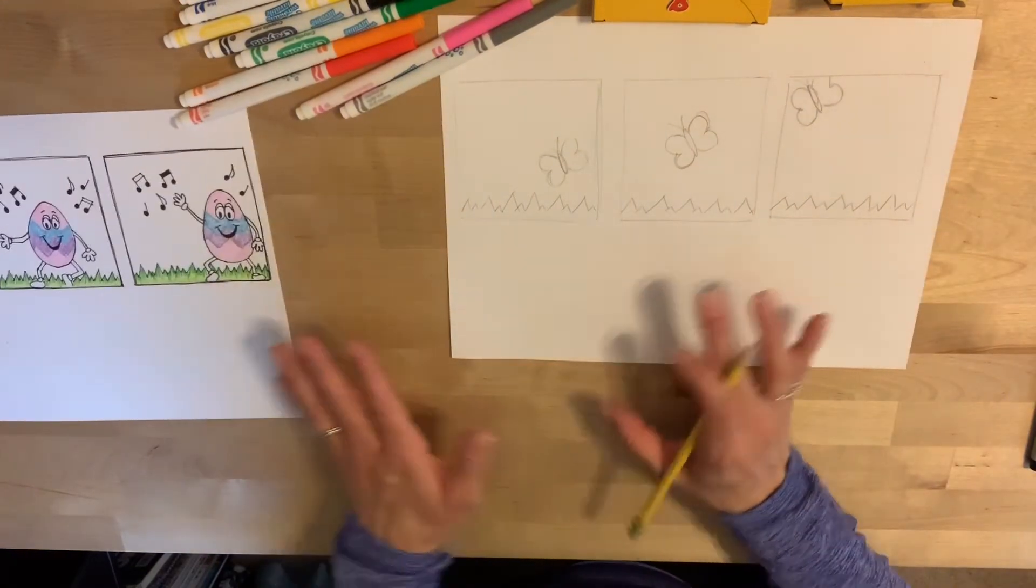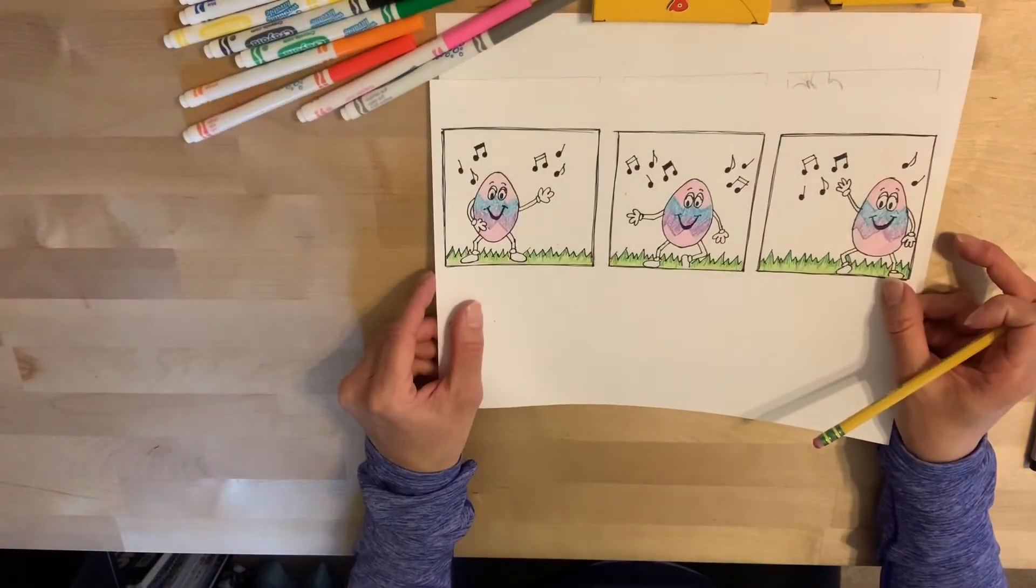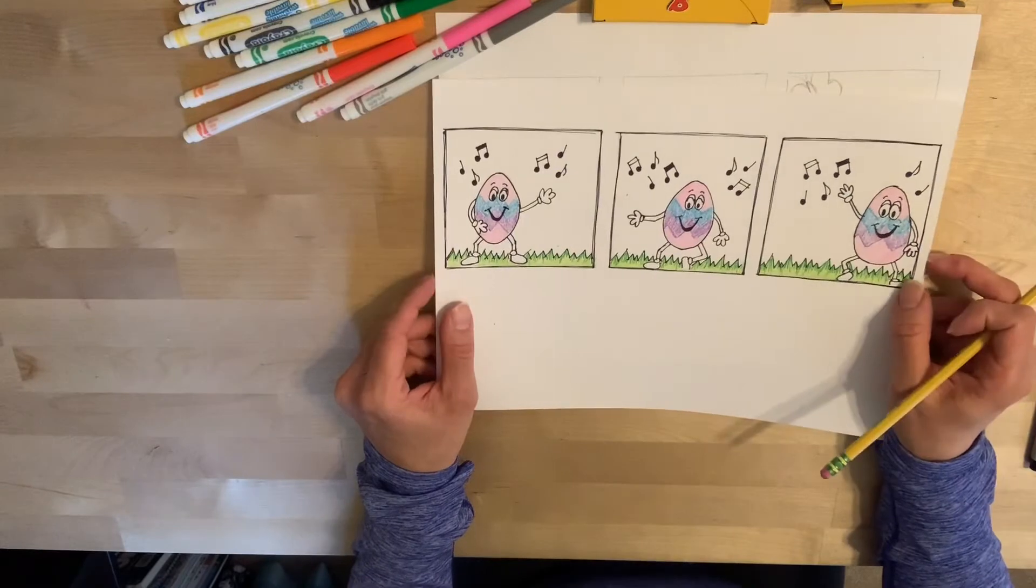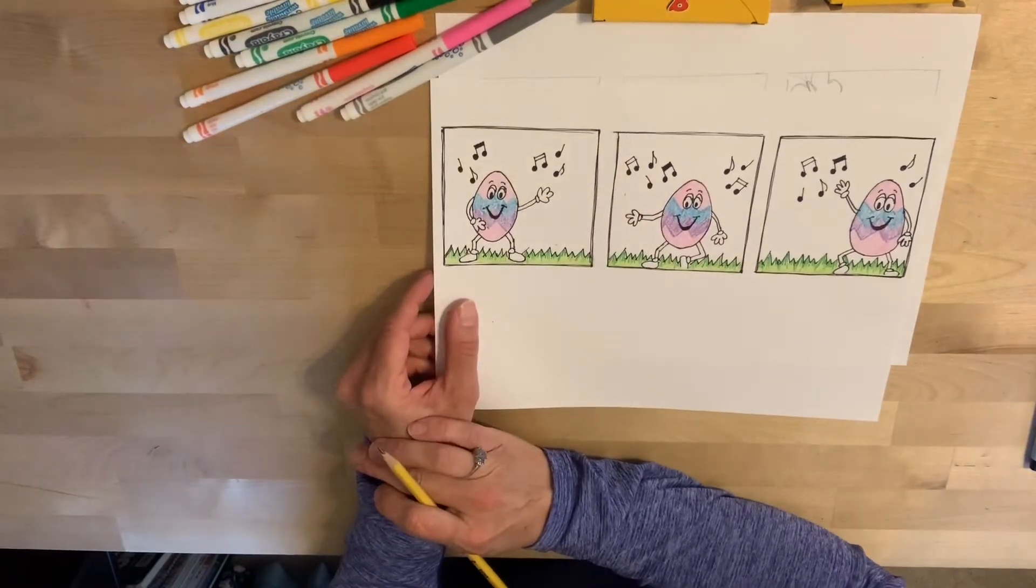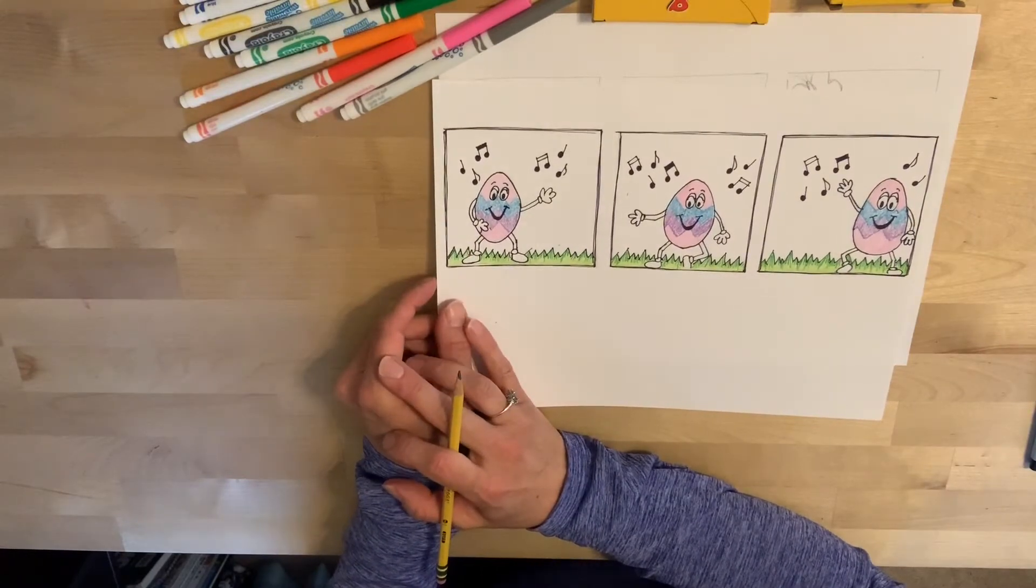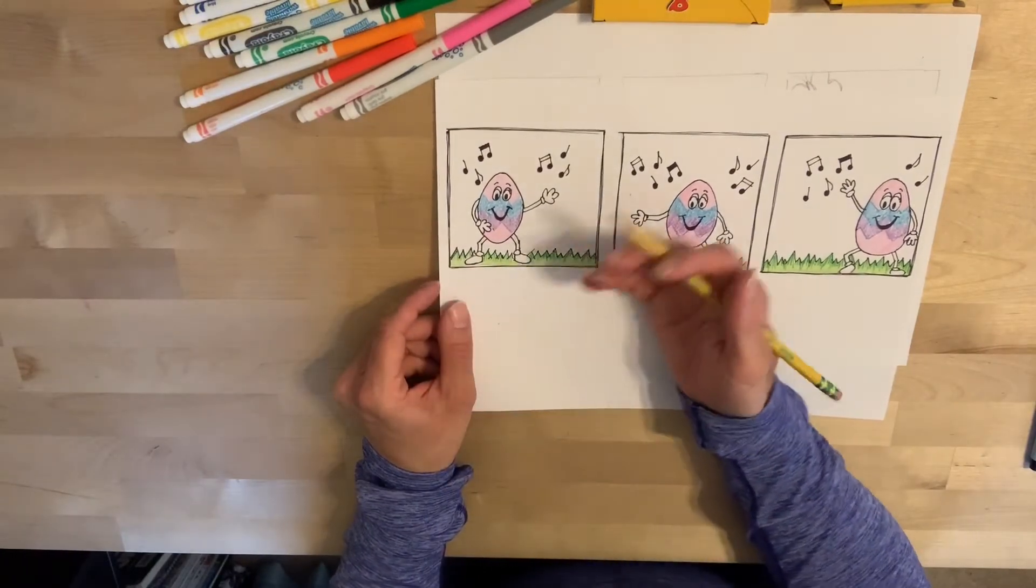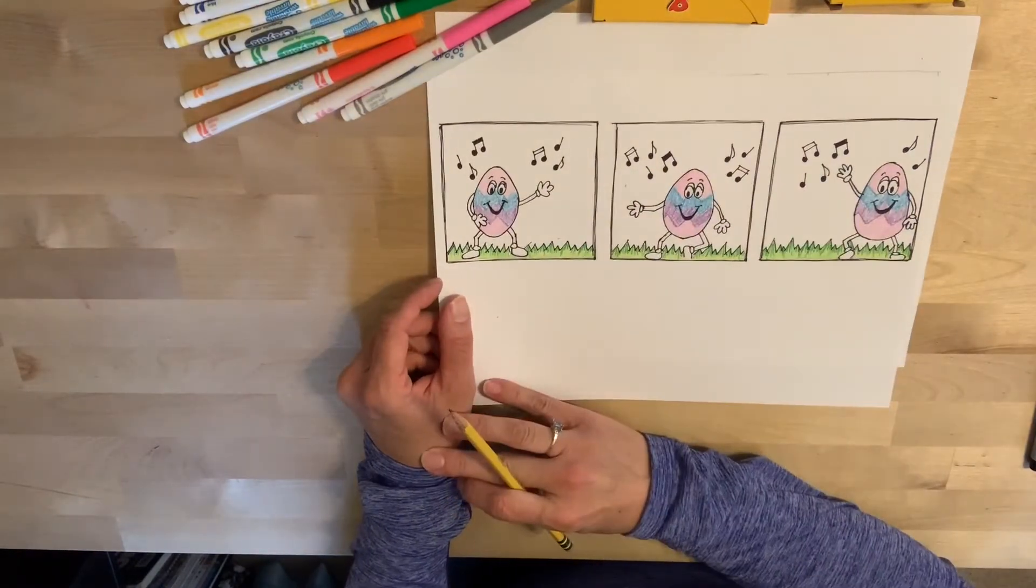Now a lot of times, comic strips will have words in them. You can see I opted not to put any words in mine. If you want to try and put some words in, you can add a little speech bubble and draw some words in there, or write some words in there. You don't have to though. Sometimes you can get your idea across just by drawing a couple little lines, like I drew the music notes. So we get the idea that the Easter egg is dancing.